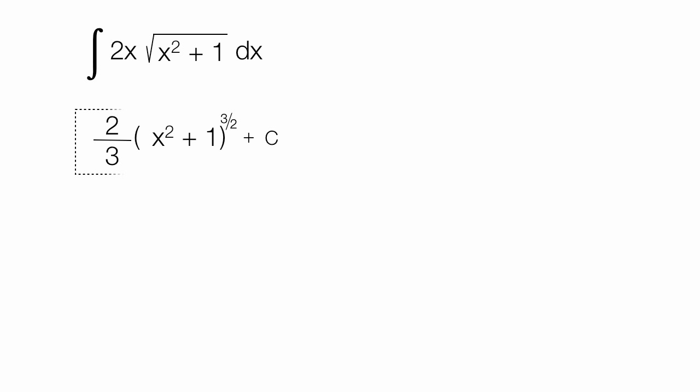You should always check to make sure you have the correct answer by taking the derivative, which I'm going to do that right now. Now I'm going to take a derivative of this. The first thing I do is lob off that c, because the derivative of a constant is nothing, it's 0.